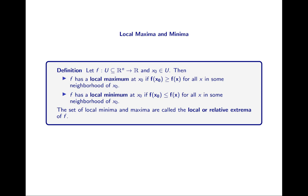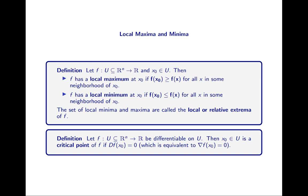The set of all local minima and maxima are called the local or relative extrema of f. A critical point, which you probably remember from Calculus 1, is where the derivative of f at x0 is 0, which is equivalent to saying the gradient is 0 — since we're talking about differentiable functions from Rn to R, the derivative is just the transpose of the gradient.